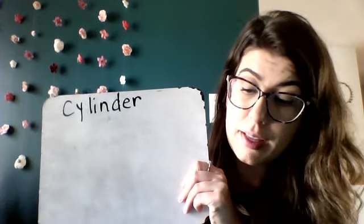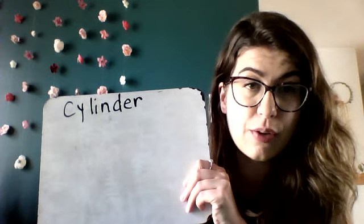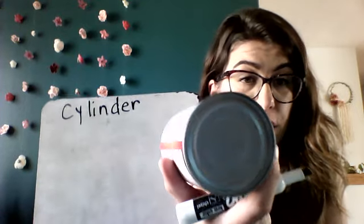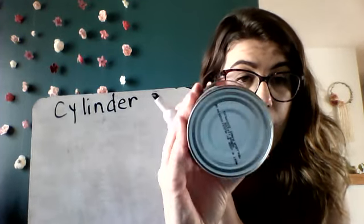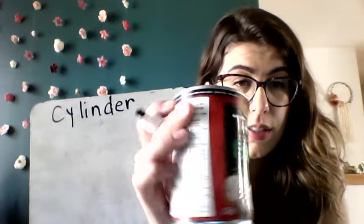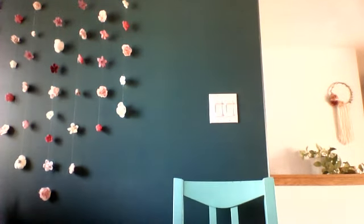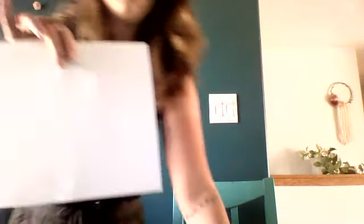So a cylinder—here are the important parts of a cylinder. It has two faces that are a circle. Do you see that, how that's a circle? Now this part of it, it's kind of hard to imagine, but if you cut this can—which, I mean, you'd have to be pretty strong—it would actually turn into a rectangle. So let me just grab a piece of paper one second.